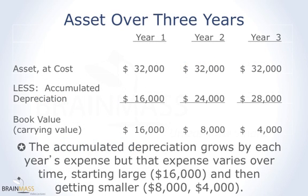As you can see, the accumulated depreciation grows each year by the depreciation expense, but that expense varies over time — it starts out large and then gets smaller and smaller. That is the accelerated method of depreciation.